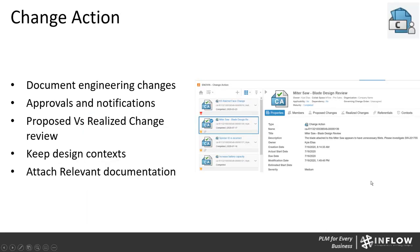Next we're going to talk about an app related to Issue Management called Change Action. Everything starts with that issue — maybe someone sent you an email or an image and you created an issue from it. From that issue, someone reviews and approves it, and it may turn into a change action. The change action allows assignees to act on those issues — maybe changing CAD parts, a process, or a document related to that issue.